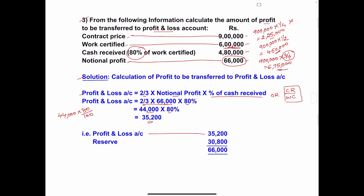Total notional profit is 66,000. Amount transferred to profit and loss account is 35,200. Remaining: 66,000 − 35,200 = 30,800, which is transferred to reserve. So reserve = 30,800, and the total of profit and loss account (35,200) plus reserve (30,800) equals 66,000, confirming the total notional profit.